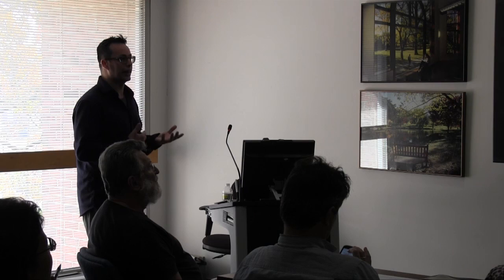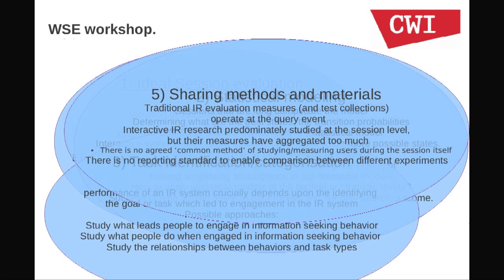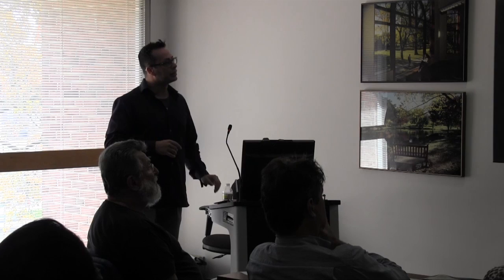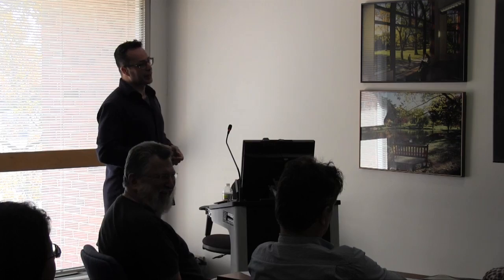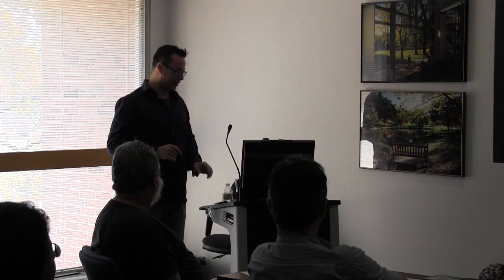There was also discussion around task identification and categorization — how evaluating a system depends on identifying the task that researchers and designers aim to support. The fifth group talked about the need for sharing and a common protocol to share the results of user studies. An important point is that there is no common method for studying or measuring users during the session and no reporting standard. The sixth group was about detecting session types. There was also a fourth breakout group on simulation — once you solve the IR problem, the simulation problem kind of comes for free, though people in the simulation group didn't agree.